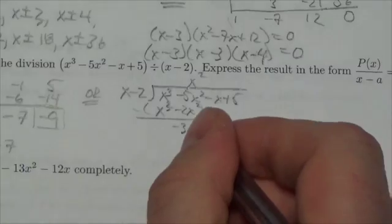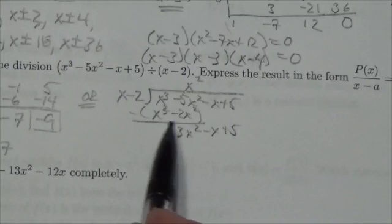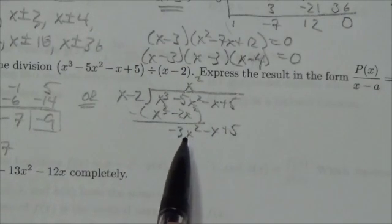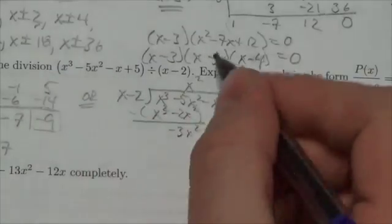Then I bring down negative x and positive 5. Now I need to eliminate the next highest degree term, this x squared. To do that, I multiply this x by negative 3x.